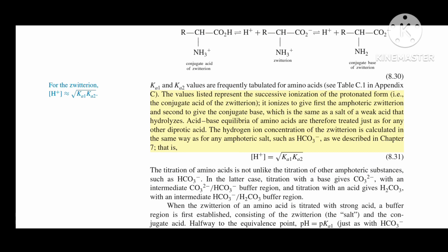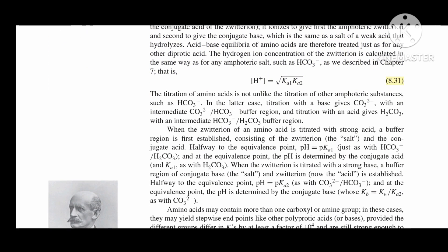The hydrogen ion concentration of the zwitterion is calculated in the same way as for any amphoteric salt, such as HCO3-, as described in Chapter 7. That is, [H+] = √(Ka1 × Ka2), equation 8.31.